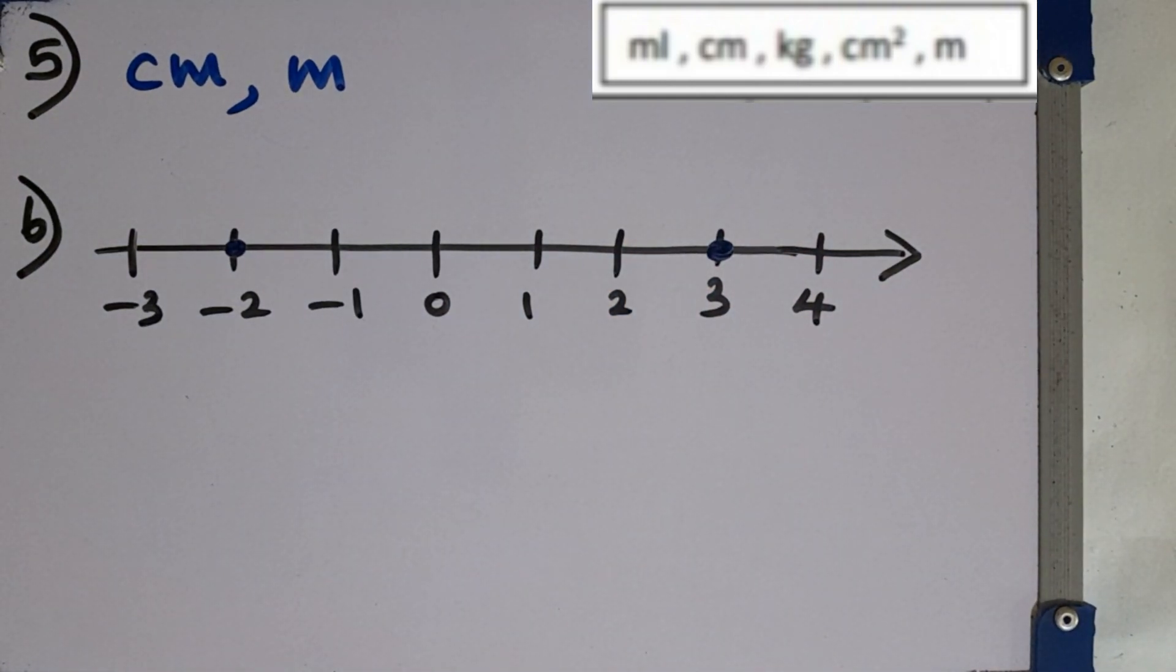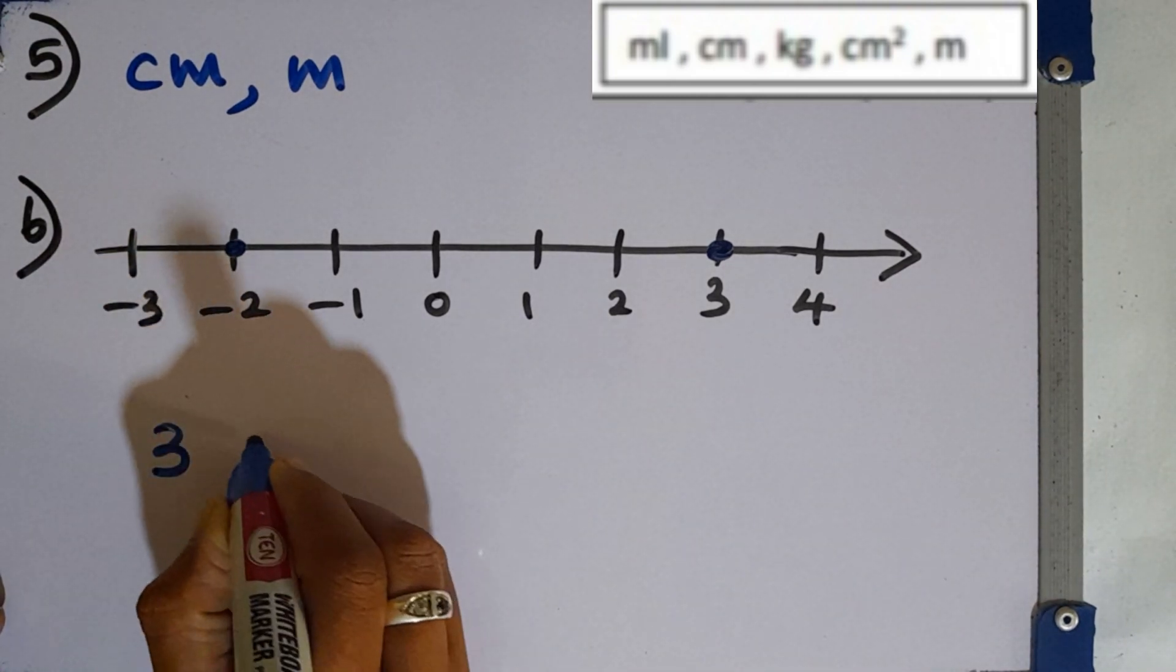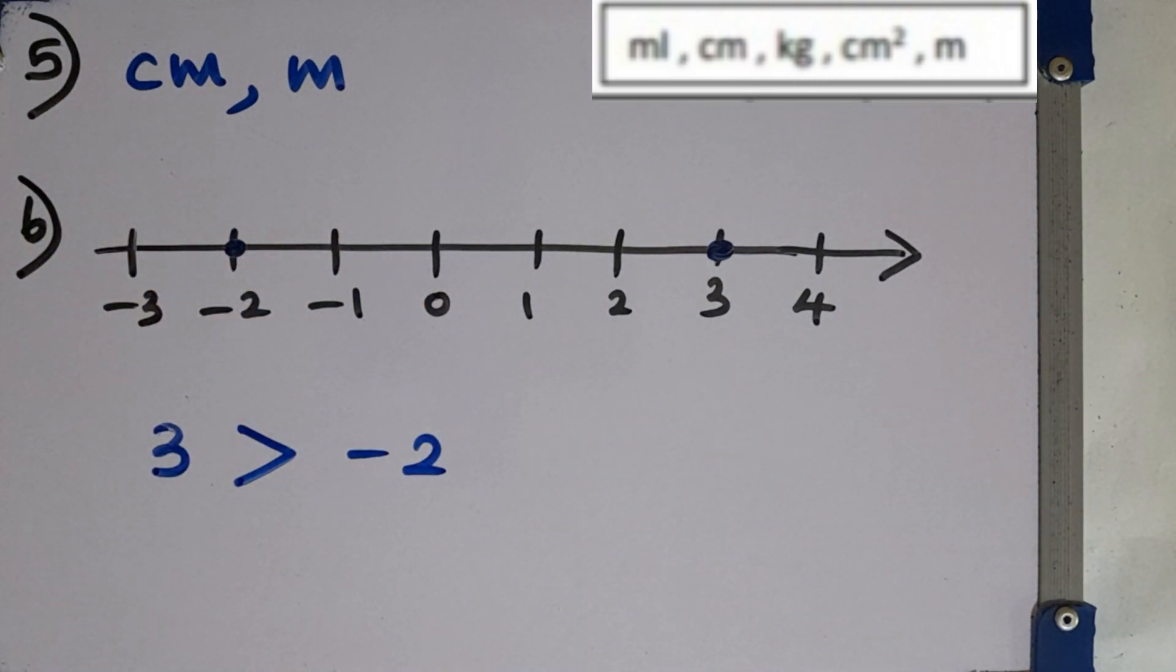In the second part you are asking use the symbol greater than to compare the above two numbers. We can write 3 is greater than minus 2. This is the way we can compare the two numbers here.